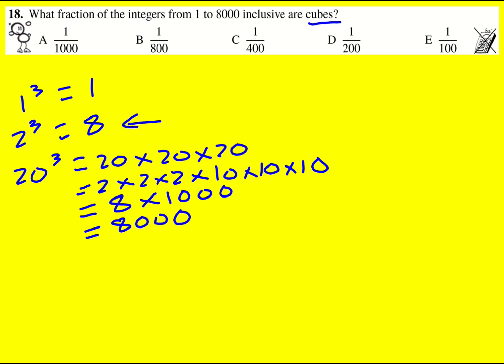So the 20th cube number is 8,000, which means that there are 20 cube numbers between 1 and 8,000, and therefore the fraction is going to be the number we have, 20, divided by the total number of integers we're interested in, which is 8,000.